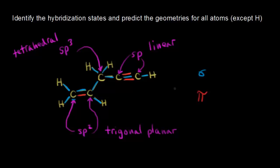If you count up all of those sigma bonds, you should get 10. Let me count: one, two, three, four, five, six, seven, eight, nine, and 10. We have 10 sigma bonds total. In terms of pi bonds, we had three pi bonds for this molecule.